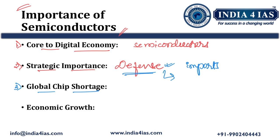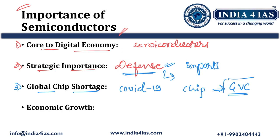The third importance is global chip shortage. Because of the COVID-19 pandemic, lockdowns all over the world disrupted the semiconductor chip global value chain. Industries dependent on semiconductor chips — such as automobiles and electronics gadgets — stopped working. In order to avoid such situations, India wants to develop its own semiconductor manufacturing units. Developing a semiconductor ecosystem will enhance economic growth, create employment and provide stimulus to exports.